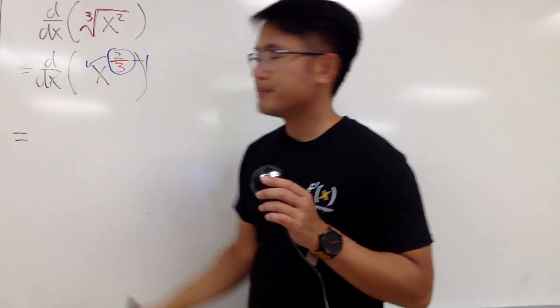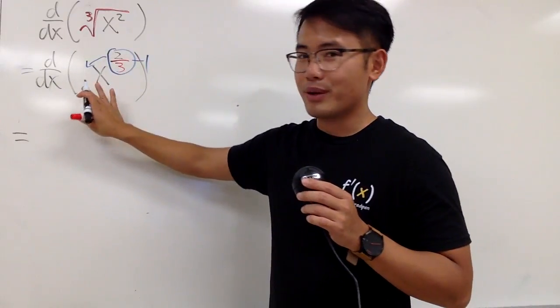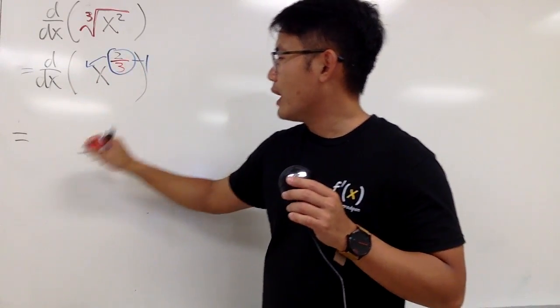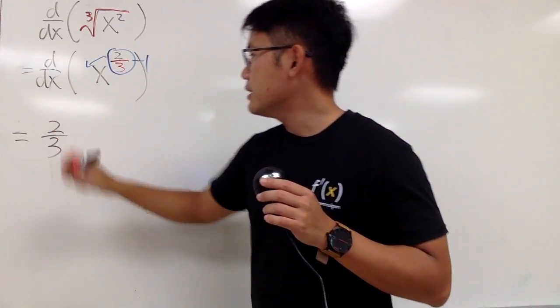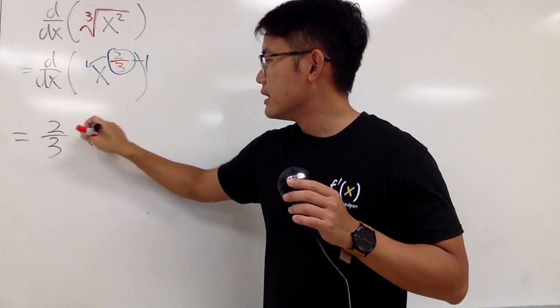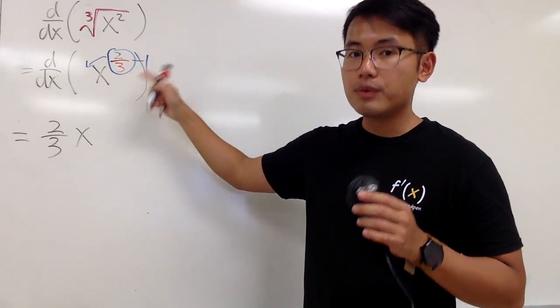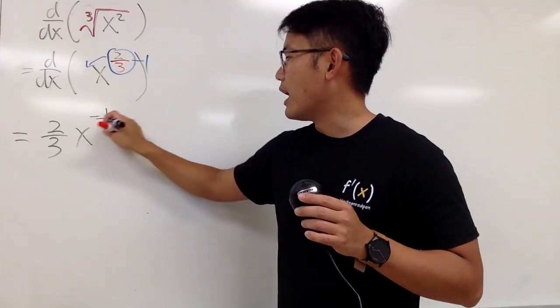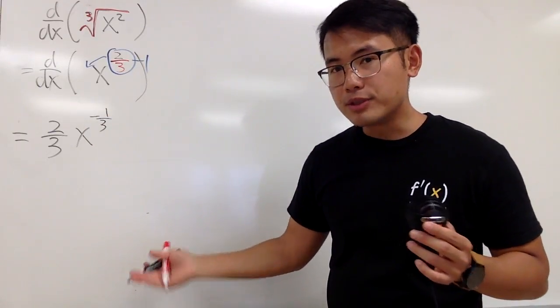And we did the derivative already, so no more d/dx. We will have 2/3, and then x, and then 2/3 minus 1, we get negative 1/3. And that's pretty much it.